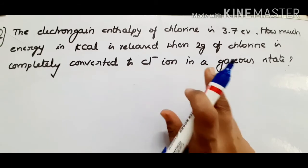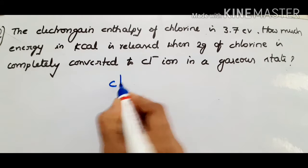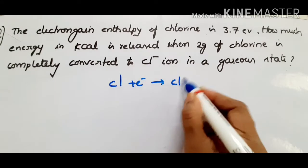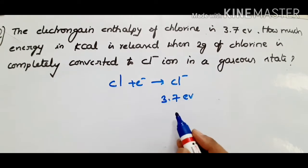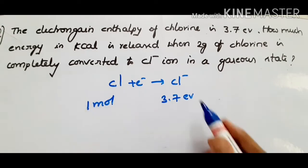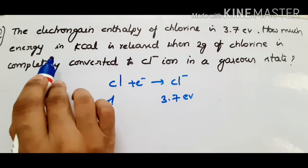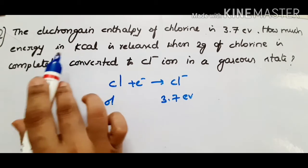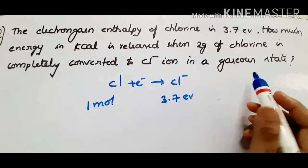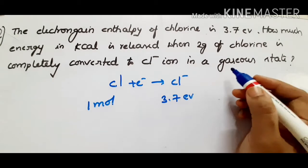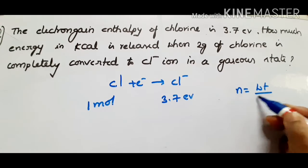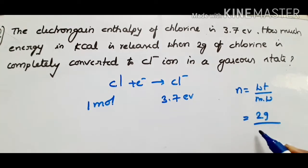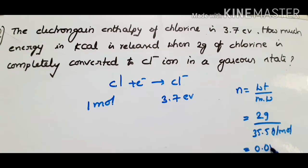Here, Cl by gaining an electron is converting into Cl⁻ ion. From the given data, 3.7 electron volts energy is released when one mole of chlorine is ionized. The question asks for energy in kilocalories when 2 grams of chlorine is converted into Cl⁻ ion. You have to convert weight into number of moles using: moles = weight ÷ molecular weight. Weight given is 2 grams, molecular weight of chlorine is 35.5 g/mol, giving 0.056 moles.